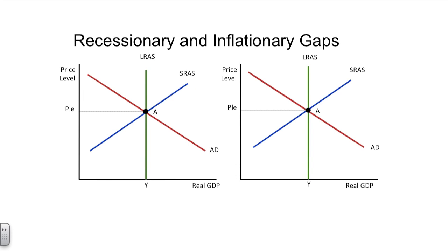There are many nuances regarding this particular model, and sometimes it gives students a little bit of trouble. But if you look at this carefully and compare it to some of the logic that we have used before, it's not too bad. First of all, remember that on this graph, we have three curves. We have a perfectly inelastic long-run aggregate supply curve. It's inelastic because, at any given time, the resources necessary to produce in a nation's economy are fixed.